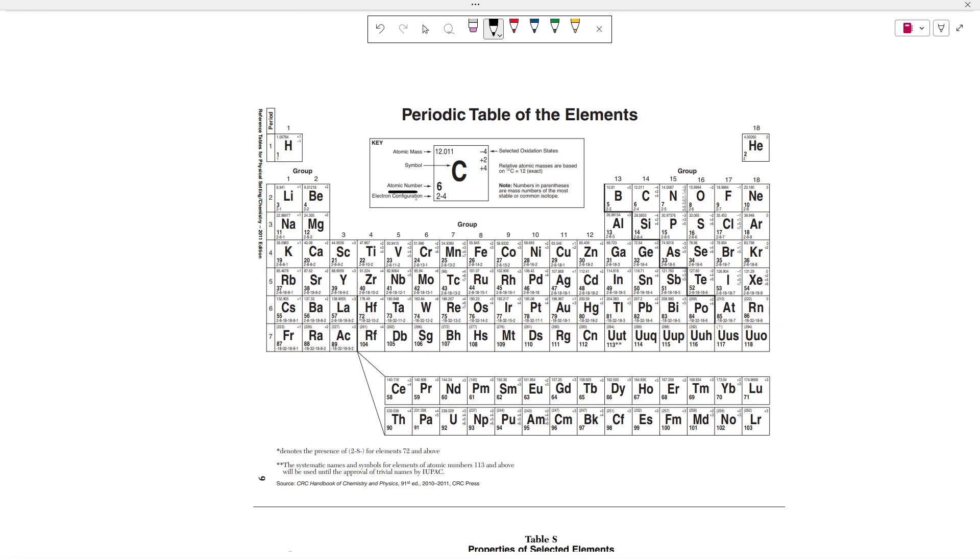For example, carbon has an atomic number of six, which means it has to have six protons. Nitrogen has an atomic number of seven, so it has to have seven protons.